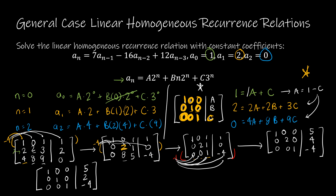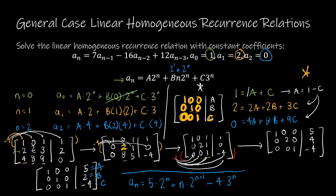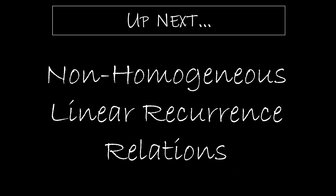So what have I accomplished? I now have A = 5, B = 2, and C = −4. The explicit formula is: a_n = 5·2^n + n·2^{n+1} − 4·3^n. This is my explicit function for finding any term of the linear homogeneous recurrence relation. Up next, we're going to take a look at non-homogeneous linear recurrence relations.